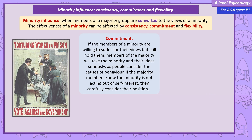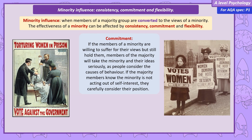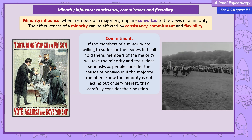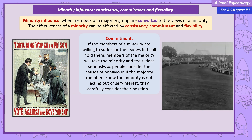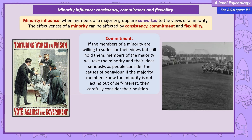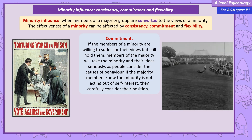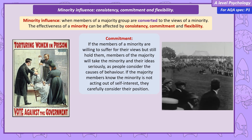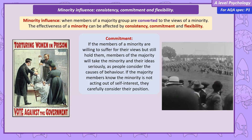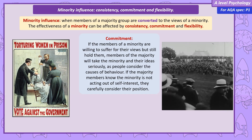A good example of commitment is the suffragettes, who demonstrated commitment by going on hunger strike, getting arrested for civil disobedience, and in the case of Emily Davison, walking in front of the king's horse at the Epsom Derby. Whilst it's debatable if she expected to die, she did want to show her commitment to the cause of women's rights to vote. We'll use this real-life example again in the evaluations and in the social change section.